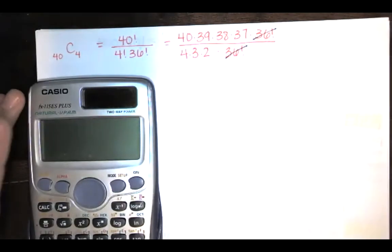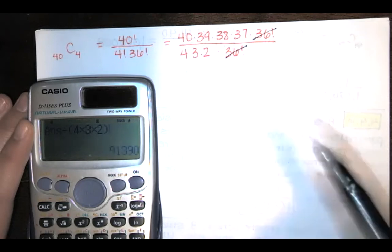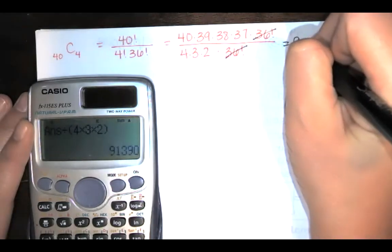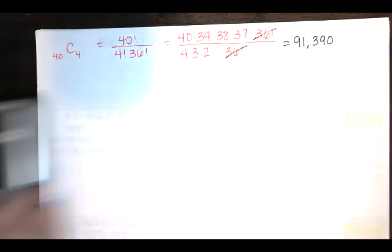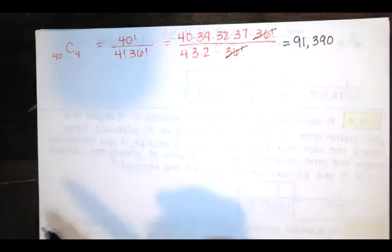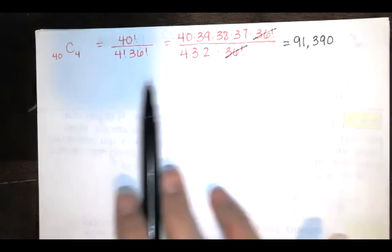Now if we just multiply that out, we get 40 times 39 times 38 times 37, and we're dividing by the product 4 times 3 times 2 times 1, which is 91,390. So there are 91,390 ways to select four numbers out of 40 numbers.